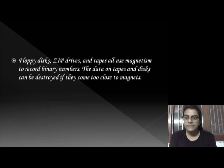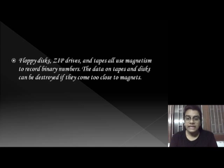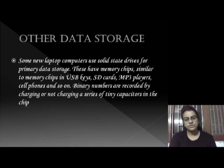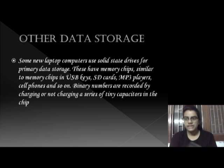Floppy disks, zip drives, and tapes all use magnetism to record binary numbers. The data on tapes and disks can be destroyed if they come too close to magnets. The process used by floppy disks or zip drives is magnetism. If we store data using magnetism and the device comes too close to a magnet, data can be damaged.